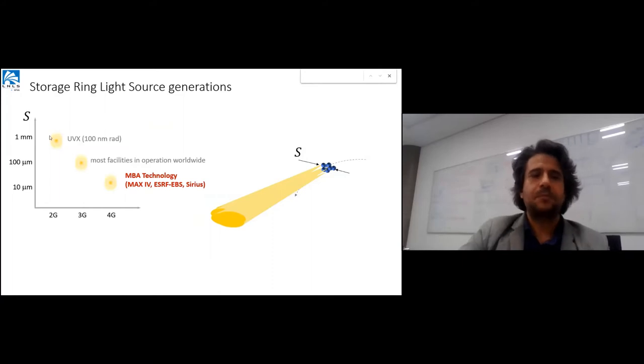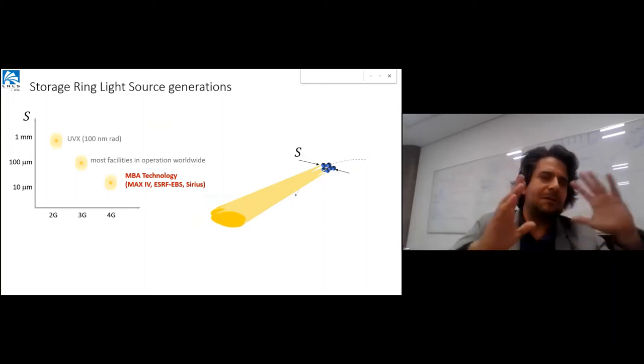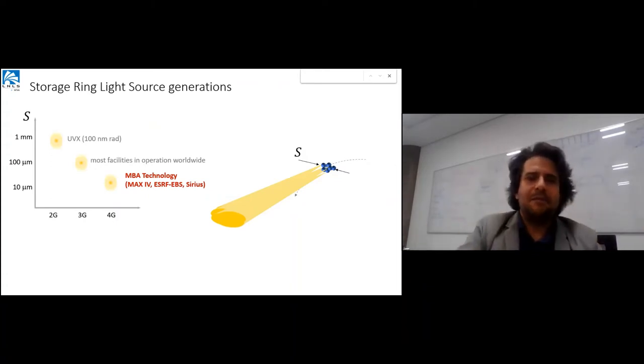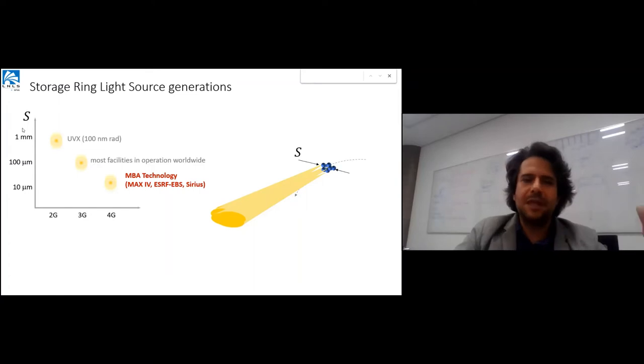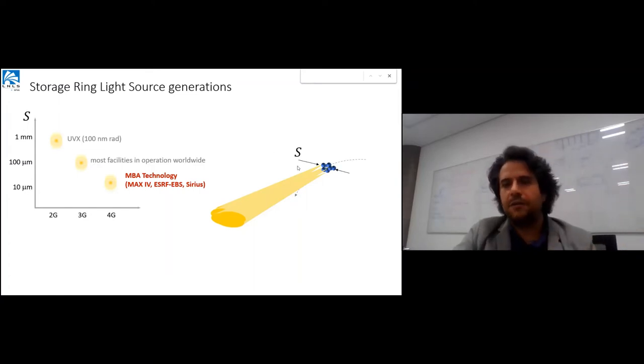We can think about generations of storage rings. The transverse size of the electron beam is what has been reduced. Second generation had order of one millimeter size, our old synchrotron. Third generation as 100 micrometer. As we go to multiband technologies spearheaded by Max IV, we reach beams of order of 10 microns - one order of magnitude reduction per generation.